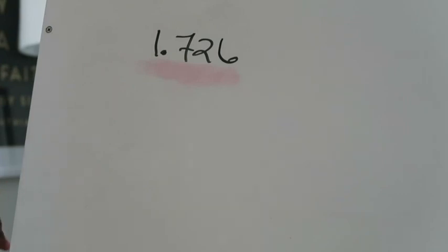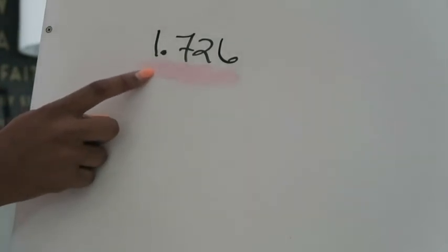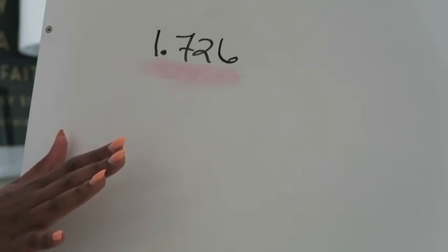The way you're looking at the decimal now — 1 and 726 thousandths written with digits and a decimal point — this is considered standard form. This is normally how you would see a decimal, and how most people represent decimals. No one really has a problem understanding standard form.